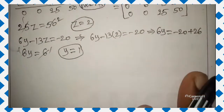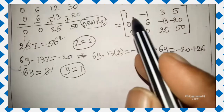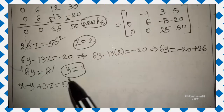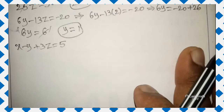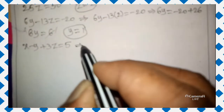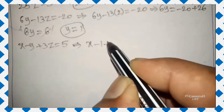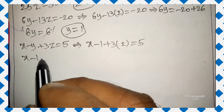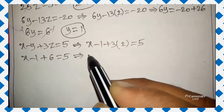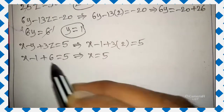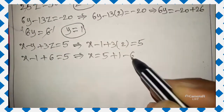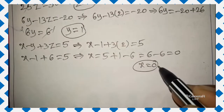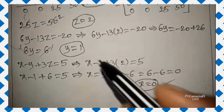From row 1: x minus y plus 3z = 5. Substituting y = 1 and z = 2: x minus 1 plus 3×2 = 5, so x minus 1 plus 6 = 5, giving x = 5 plus 1 minus 6 = 0. Therefore the solution is x = 0, y = 1, z = 2.